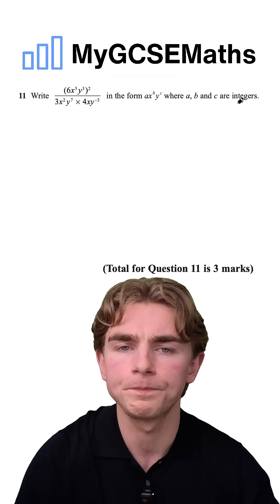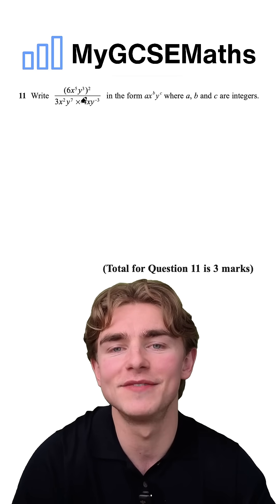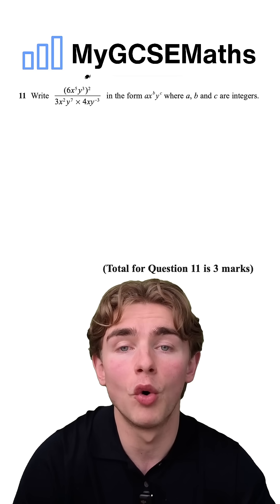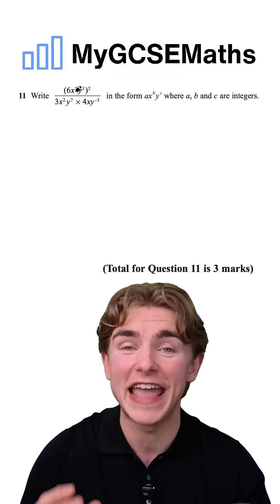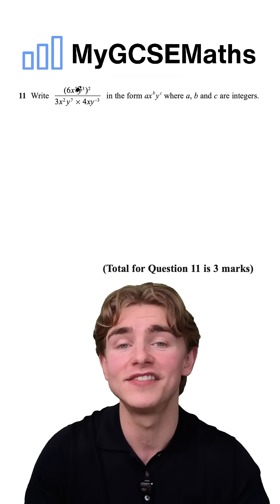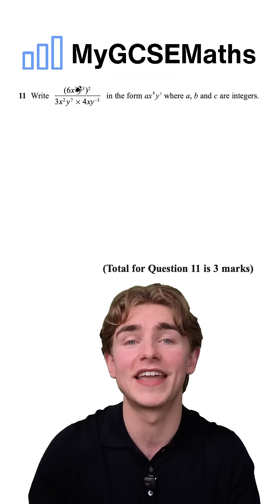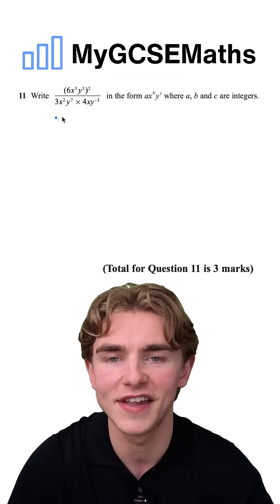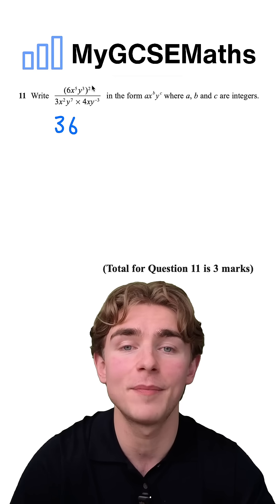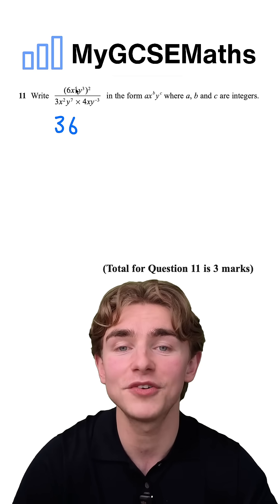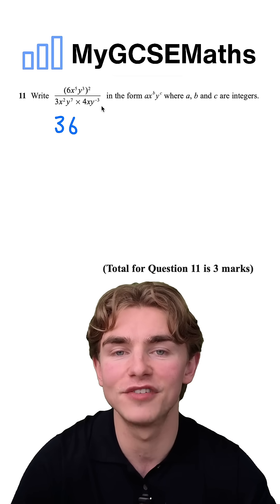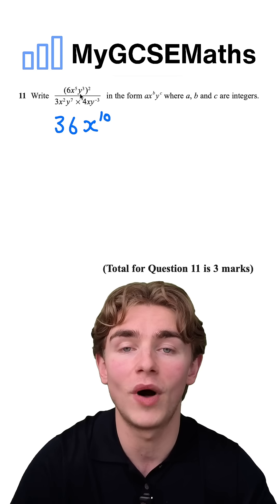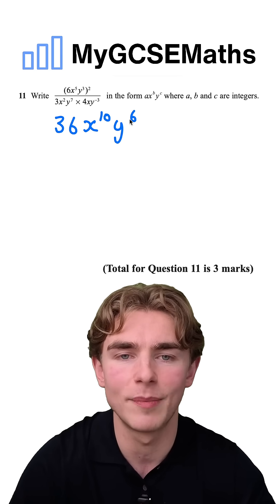First of all, we're going to simplify our numerator. On the top, we have 6x to the 5, y to the 3, all to the power of 2. Whenever we have something inside brackets to a power, we need to raise every single term inside the brackets to the power. We're going to do 6 to the power of 2, which is 36. Then x to the power of 5 to the power of 2 — when we have a base to a power raised to another power, we multiply those powers together, so 5 times 2 gives us x to the power of 10. Likewise for the y, 3 times 2 gives us y to the power of 6.